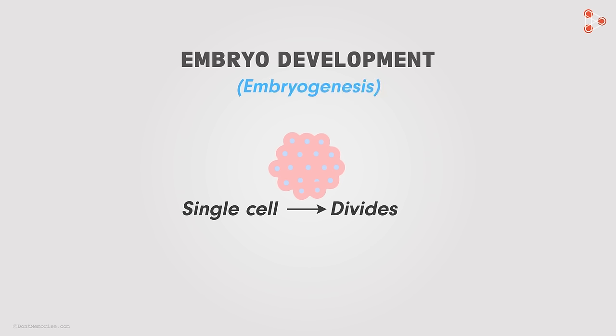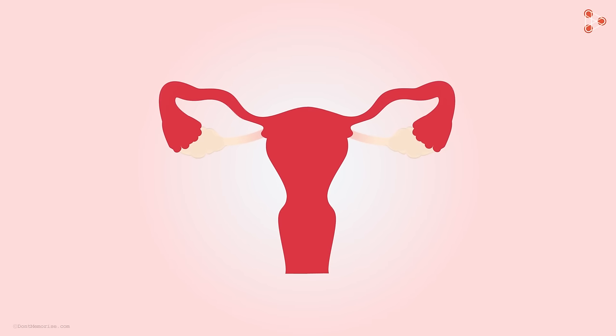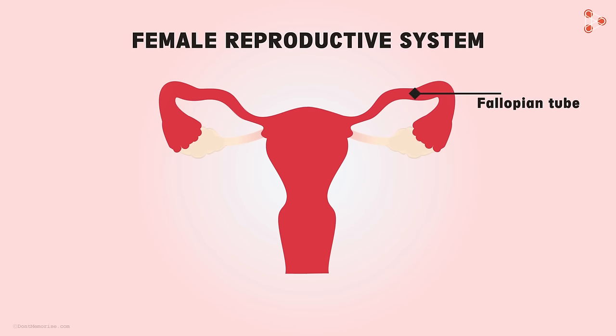In simplest words, embryogenesis is the process that follows fertilization. Where exactly does the fertilization take place in humans? It takes place in the fallopian tubes of the female reproductive system. However, before reaching the uterus, the embryo undergoes a series of divisions that help in its growth and development.